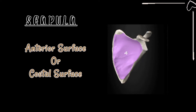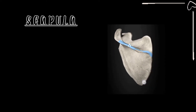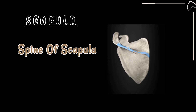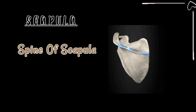Focusing on the scapular bone, the anterior surface — also called the costal surface — is a more plain surface, marked here in purple. If we turn the scapula around to the posterior surface, the prominent structure marked in blue is called the spine of the scapula, which divides the posterior surface into an upper half and a lower half. This is a key landmark for identifying the anterior and posterior sides.